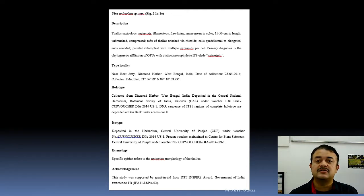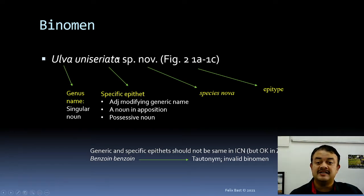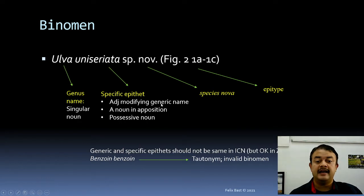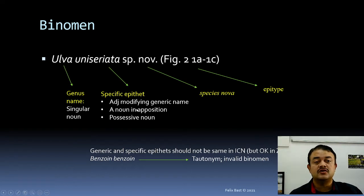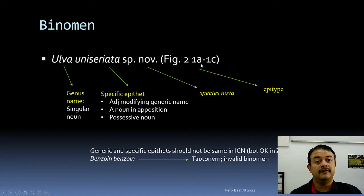Etymology is another part of the description — why I chose this epithet. Ulva is an existing Linnaean genus name; uniciriata is the name I chose for my species. The etymology section explains the history of the word: the specific epithet refers to the uniciriate morphology of the thallus, which aids in identification. Looking at the binomen, Ulva is the genus name (singular noun) and uniciriata is the specific epithet — an object modifying the generic name, a noun in apposition, or a possessive noun.